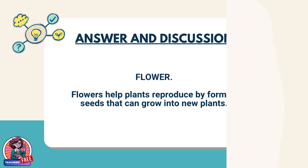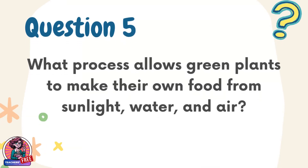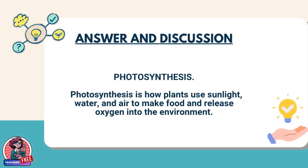Question 5. What process allows green plants to make their own food from sunlight, water, and air? Answer: Photosynthesis. Photosynthesis is how plants use sunlight, water, and air to make food and release oxygen into the environment.